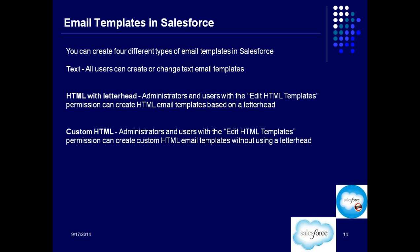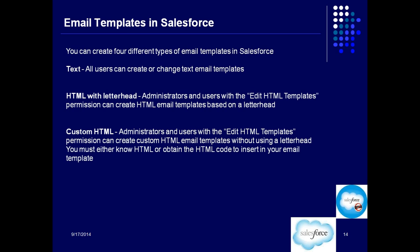Second, HTML with Letterhead — administrators and users with the 'Edit HTML Template' permission can create this type. It supports text formatting, colors, font size, links, and pictures. Third, Custom HTML — also requires the 'Edit HTML Template' permission. The difference from the second type is that here you must write HTML code directly to do the formatting, rather than using a formatting palette.